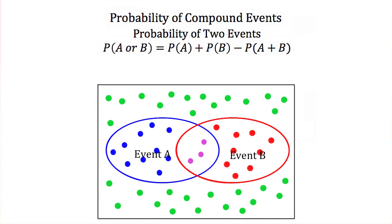Now let's talk about the probability of two events. If we want the probability of A or B happening, that's equal to the probability of A plus the probability of B minus the probability of A and B — that is, minus the probability of the intersection of A and B.